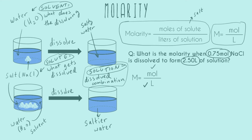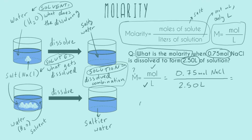This is a common test question — they'll give you a volume in something that's not liters, and you're going to have to convert before you can plug in. We're asked to find the molarity. In this practice problem, we don't have to do any algebra because the two variables we have are already on one side, and the variable we're looking for is already by itself on the other side. So we can just plug in. I get 0.30. My units are capital M — that's the abbreviation for molarity; don't use a lowercase m. For sig figs, I have 2 here and 3 here, so 2 sig figs is my limitation. So 0.30 molar is my final answer.